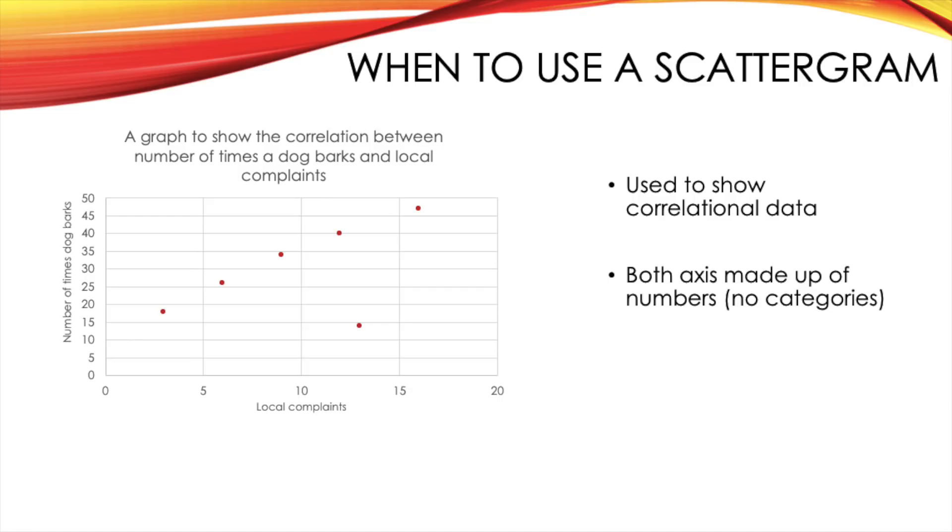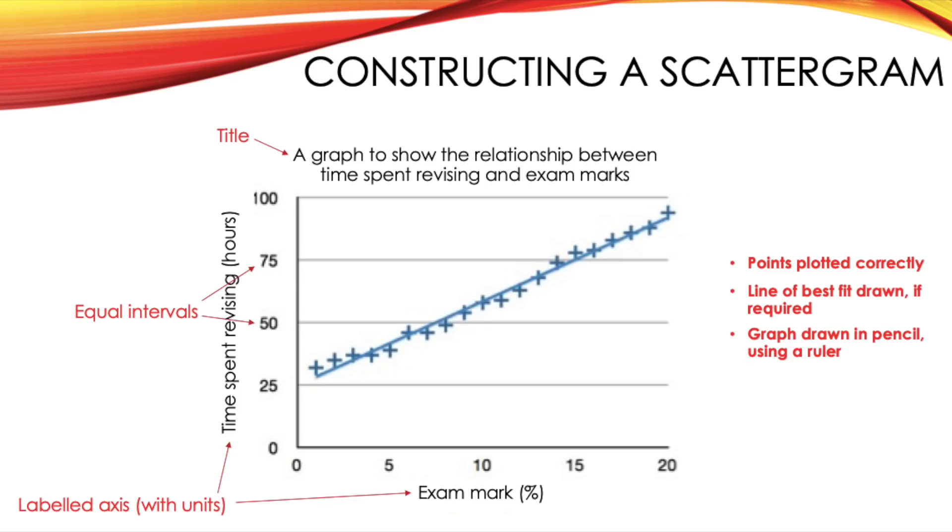When you plot your data you'll find it either shows you a positive, negative or no correlation. So how would you go about constructing a scattergram? Many of the points do cross over from a bar chart but of course it is plotted slightly differently.